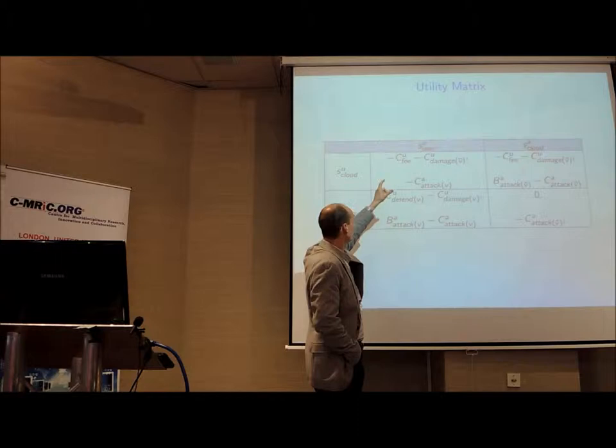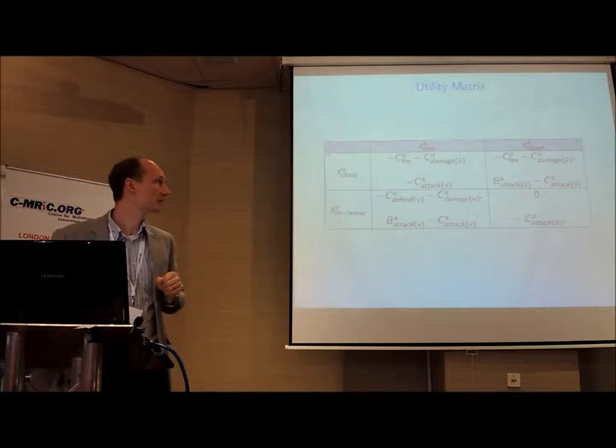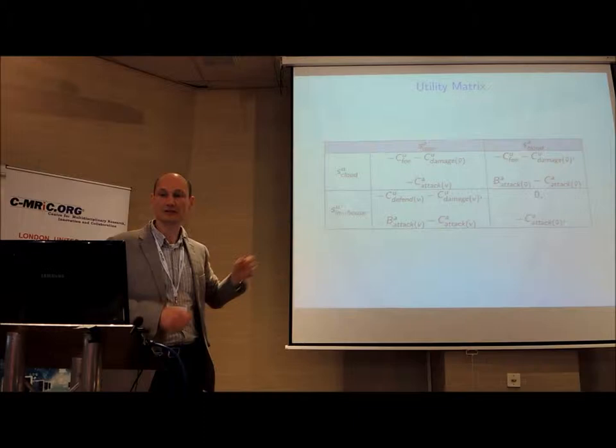And here there are two values per cell. The first value is the one for the user, cost-benefit. And the second is the other player, so the attacker. So this is a little bit technical but it's a good way to basically specify the game. That's effectively the normal form of our game.